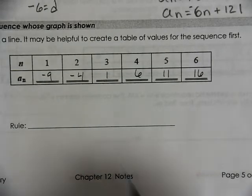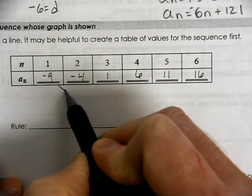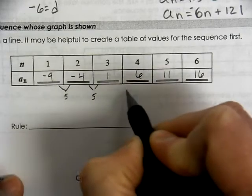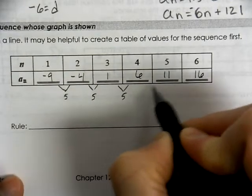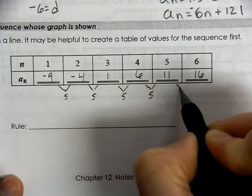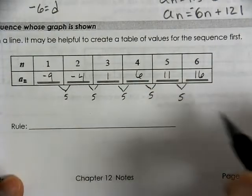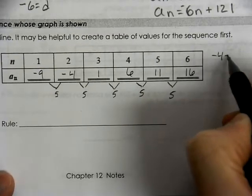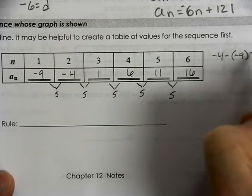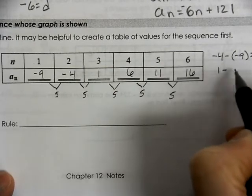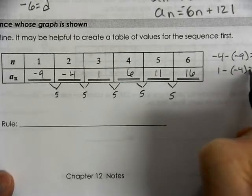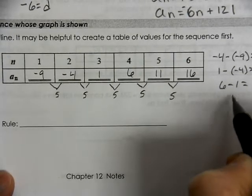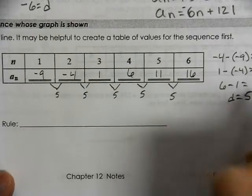Notice we have a common difference here of 5 between each value. The other way we could test it is to take your negative 4 and minus the term before it. Take the 1 and minus the term before it. Take the 6 and minus the term before it. You would still get a d value that equals 5.